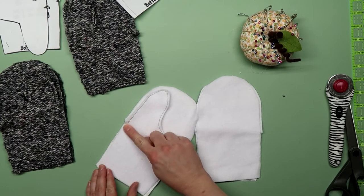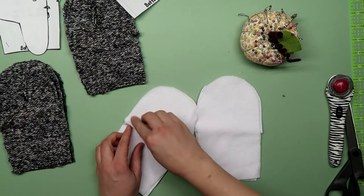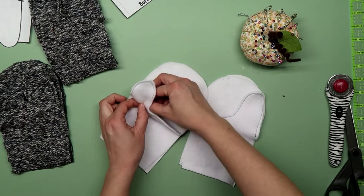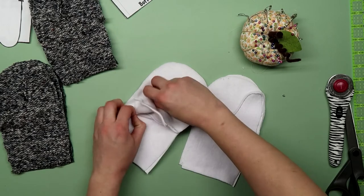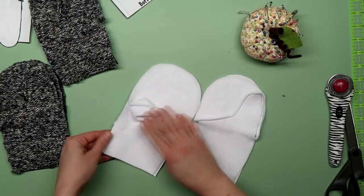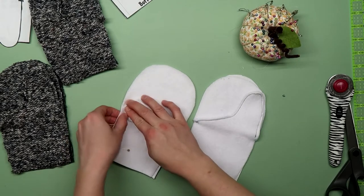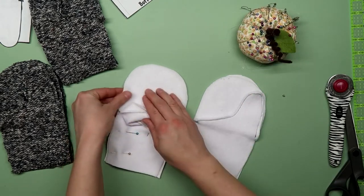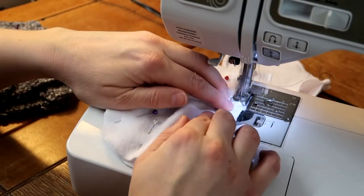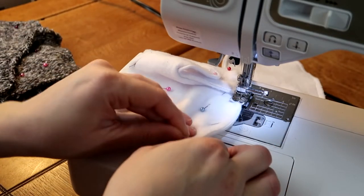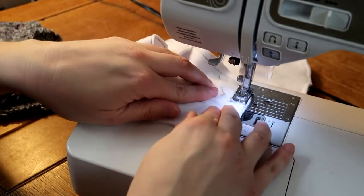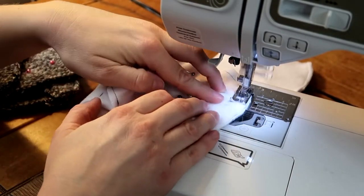Pin and sew together with a quarter inch seam allowance making sure to smush the thumb piece out of the way.